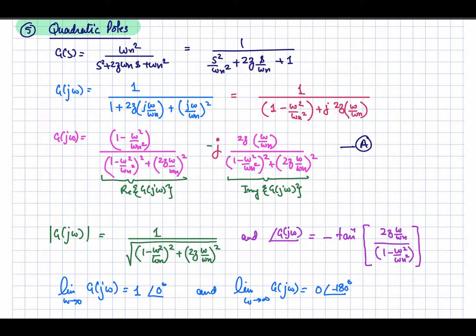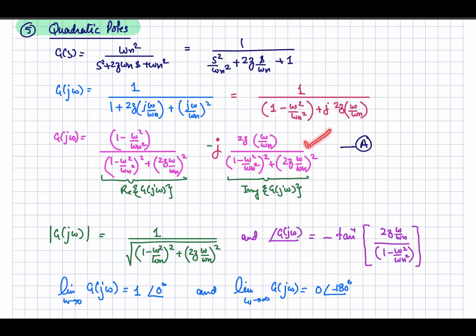To get the real and imaginary parts we rationalize by multiplying with the complex conjugate: 1 minus omega squared over omega_n squared, minus j times 2*zeta*omega over omega_n. After rationalizing and separating, the real part and imaginary part are each functions of the frequency omega.